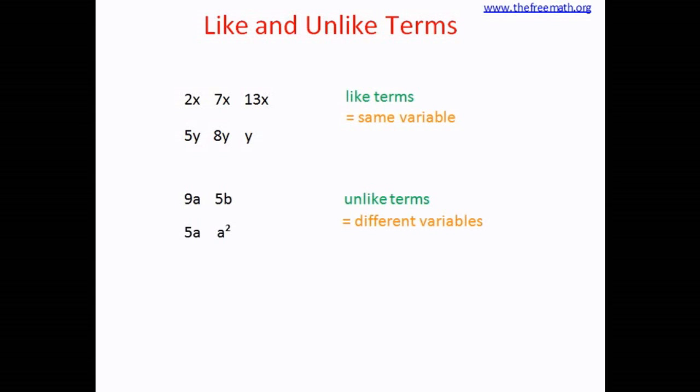Now let's look at this example 5a and a square. You can see that in the first term the variable is a and in the second term the variable is a square. Now what should I call this? Are these like terms or are these unlike terms? These are unlike terms.